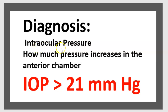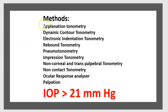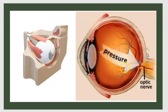For diagnosis, intraocular pressure is measured — values over 21 mmHg indicate elevated pressure. Many methods exist: applanation tonometry, dynamic contour tonometry, electronic indentation tonometry, rebound tonometry, pneumotonometry, impression tonometry, non-corneal and transpalpebral tonometry, non-contact tonometry, and ocular response analyzer tonometry. Palpation is not sensitive. High pressure can lead to optic atrophy.